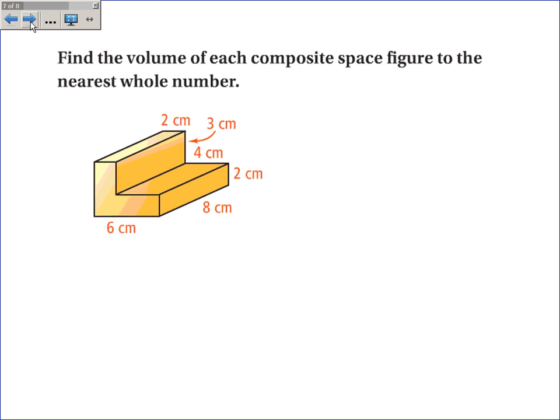Find the volume of this composite solid. Now a composite solid means it's made up of more than one solid. This one is made up of more than one rectangular prism. And what you do is you just chop it up into pieces that you know how to work with. So I will chop this up into two rectangular prisms and find the volume of each prism, and then add them together. So I will start off with this bottom piece.